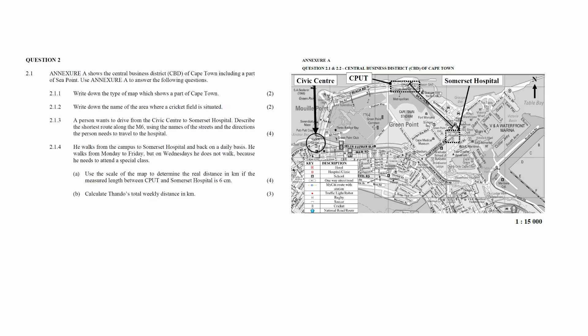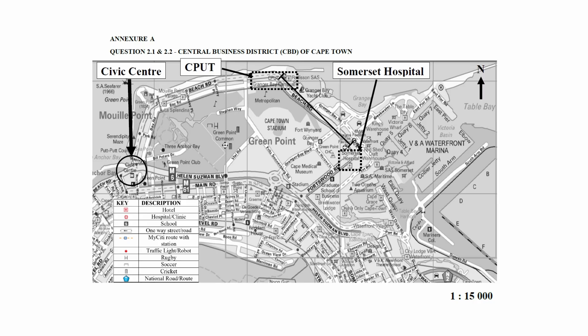Question 2.1 consists of five maps and plans questions designed to assess your understanding of road maps. You are given a road map in Annexure A that shows the central business district or CBD of Cape Town, including a part of Sea Point. You are also given an arrow that points to the direction of north, keys along with their descriptions for the symbols of the map, as well as a ratio scale of 1 to 15,000.